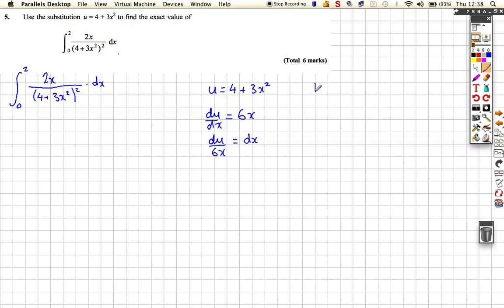But we've also got to think about changing our limits. When we change from dx to du, our limits, we've got x at the moment, and we've got to change those to u. So at the moment, our limit of 2, we need to work out what u is when x is 2.